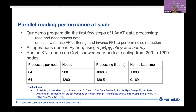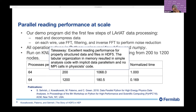Our demo program did the first few steps of LArIAT data processing: reading and decompressing data, then on each wire performing FFT and filtering, and then inverse FFT for noise reduction. The code was written in Python using MPI4Py, H5Py, and NumPy. We ran tests at scale on Cori and demonstrated nearly perfect scaling from 200 to 1,200 nodes. We saw excellent reading performance for properly structured data and files in HDF5. The tabular organization in memory resulted in simple analysis code with implicit data parallelism and no MPI calls present in physicists' code — that was an important aspect.